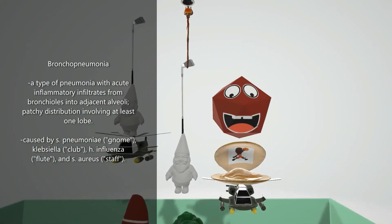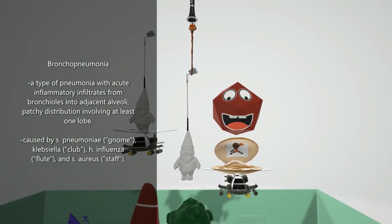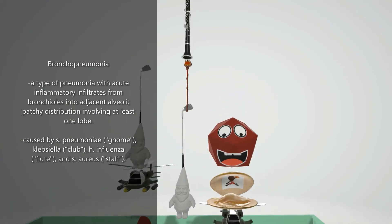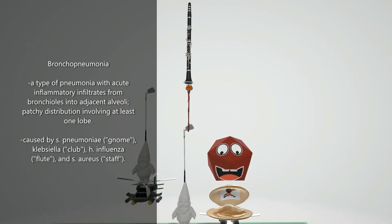To remember the causative organisms for bronchopneumonia, we see the microbes coming down into the broccoli. There's the gnome microbe for Strep pneumoniae, a club on his head for Klebsiella, a staph symbol for Staph aureus, and a flute on top for influenza — Haemophilus influenzae. Bronchopneumonia is caused by Strep pneumoniae, Staph aureus, Haemophilus influenzae, and Klebsiella.